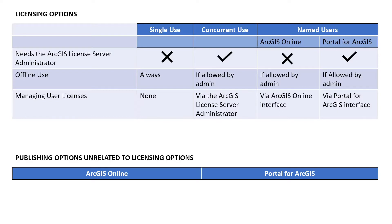ArcGIS Pro can be licensed in essentially three different ways: single-use licenses, concurrent-use licenses, and named users. Named users can then come from two different locations. By default, most users will be licensing ArcGIS Pro with ArcGIS Online because that is what comes with ArcGIS Desktop, but you do have all these other options available to you.